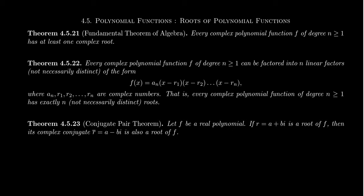And then some consequences of the fundamental theorem of algebra: Every complex polynomial function f of degree n greater than or equal to 1 can be factored into n linear factors. And these factors don't necessarily have to be distinct, they could be repeated. So every polynomial will look like f of x is a to the n times x minus the first root times x minus the second root times x minus the third root all the way down to x minus the nth root.